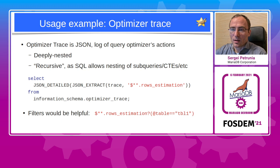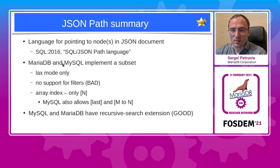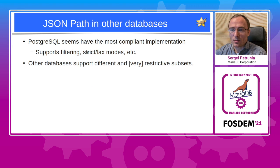Summary on JSON path: The language for pointing to nodes in a JSON document is called the SQL JSON path language, introduced in SQL 2016. Both MariaDB and MySQL implement a subset — now documented. Lax mode only; filters are not supported, which is unfortunate. Array indexing only supports a single integer index. Both MySQL and MariaDB have the same recursive search expression — that is good. Looking at other databases, PostgreSQL seems to have the most compliant and feature-rich implementation, supporting filtering, strict/lax mode, and so forth. Other databases support different and often very restrictive subsets, so here MySQL and MariaDB are quite competitive.